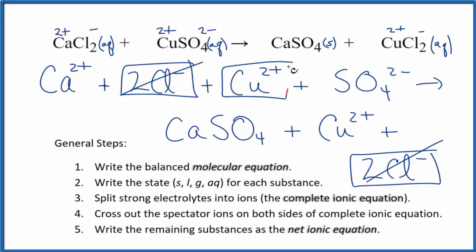We have copper 2 ions in the reactants, and again, in the products. Spectator ions, we cross them out. What's left, that's the net ionic equation for CaCl2 plus CuSO4. I'll clean this up.